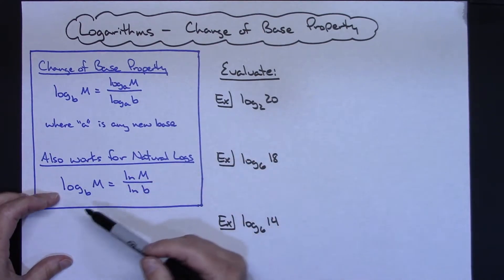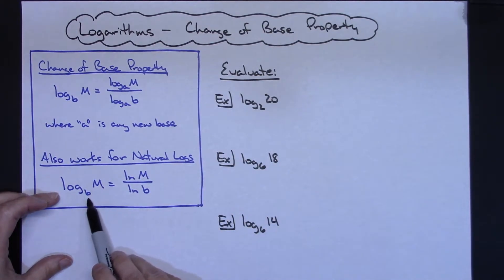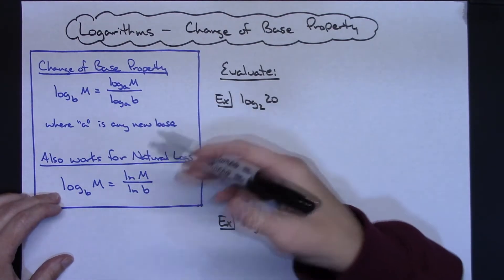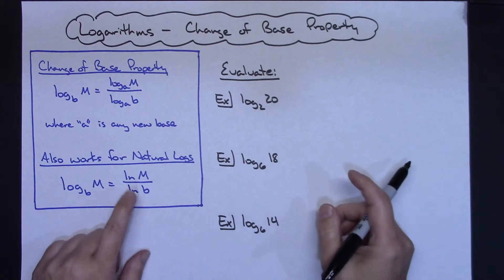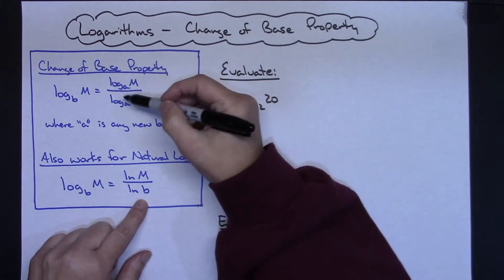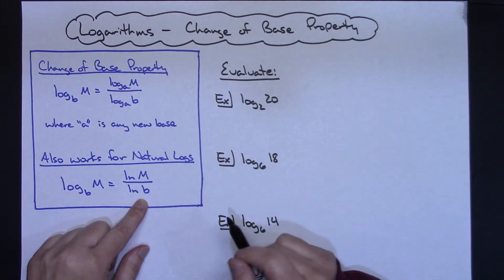Now this also works for natural logs as well. If I had the log of M base B, I could change this into the natural log of M over the natural log of B. Either way, either one you choose to do, because you're just doing like bases here and like bases here, so it's the exact same thing.